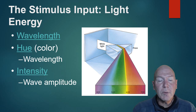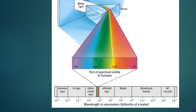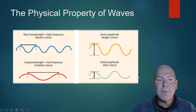The characteristics of the energy we look at are wavelength, hue, and intensity. The electromagnetic energy spectrum is what is reflected — our species of human beings is only designed to pick up a small portion of the spectrum. There's much more, all the way from AC circuits to gamma rays and X-rays. Other species may be different; for example, a bee can't see red but can see ultraviolet rays below our range of sight.